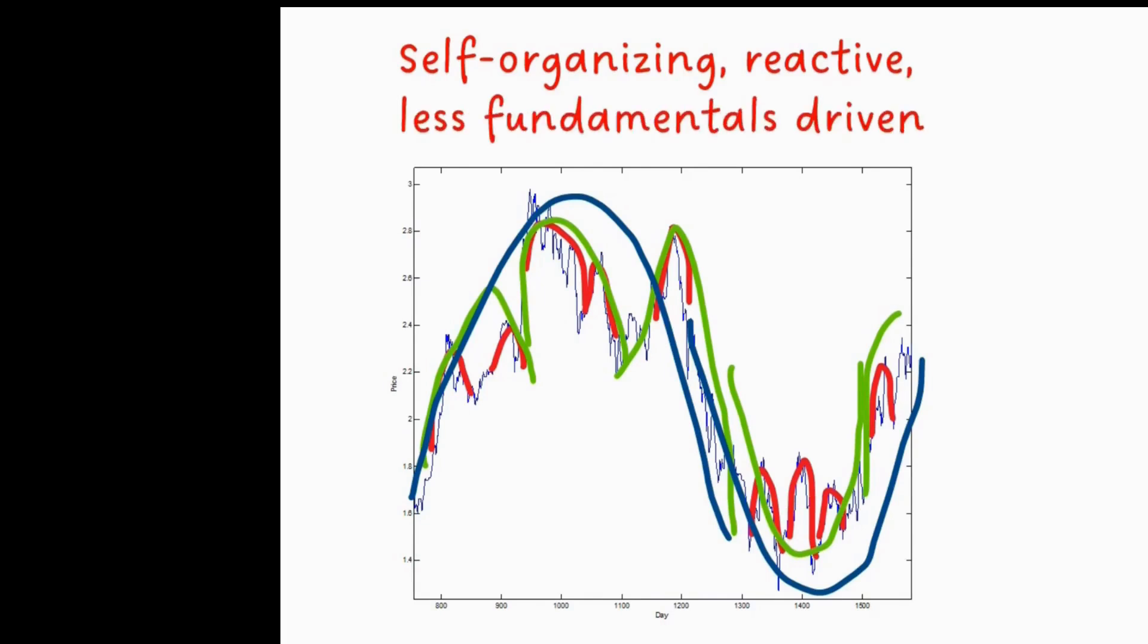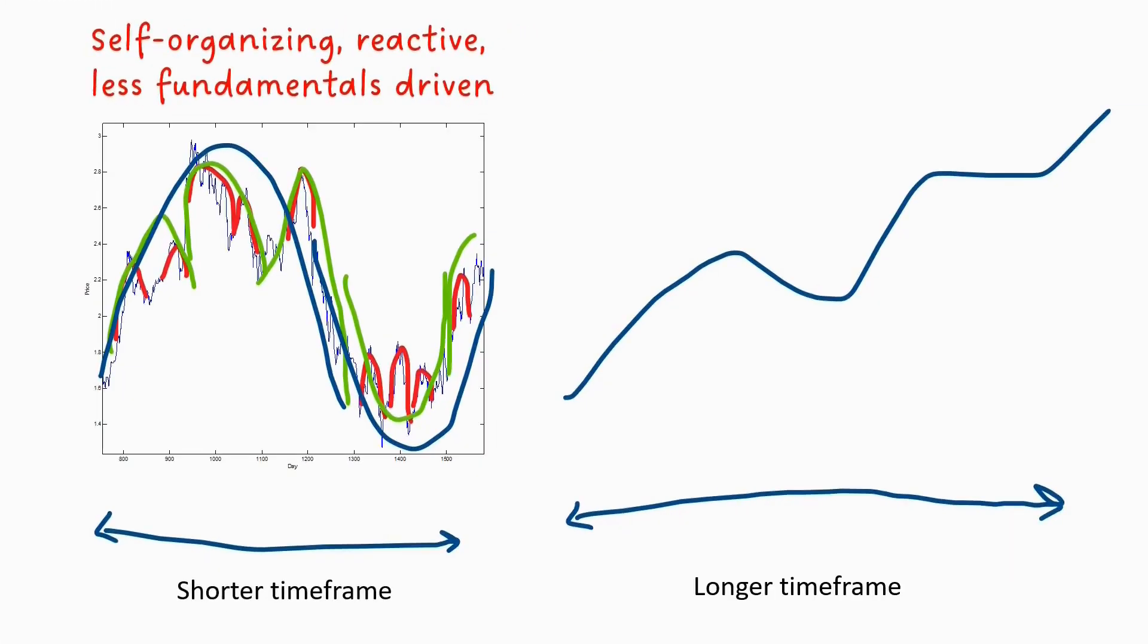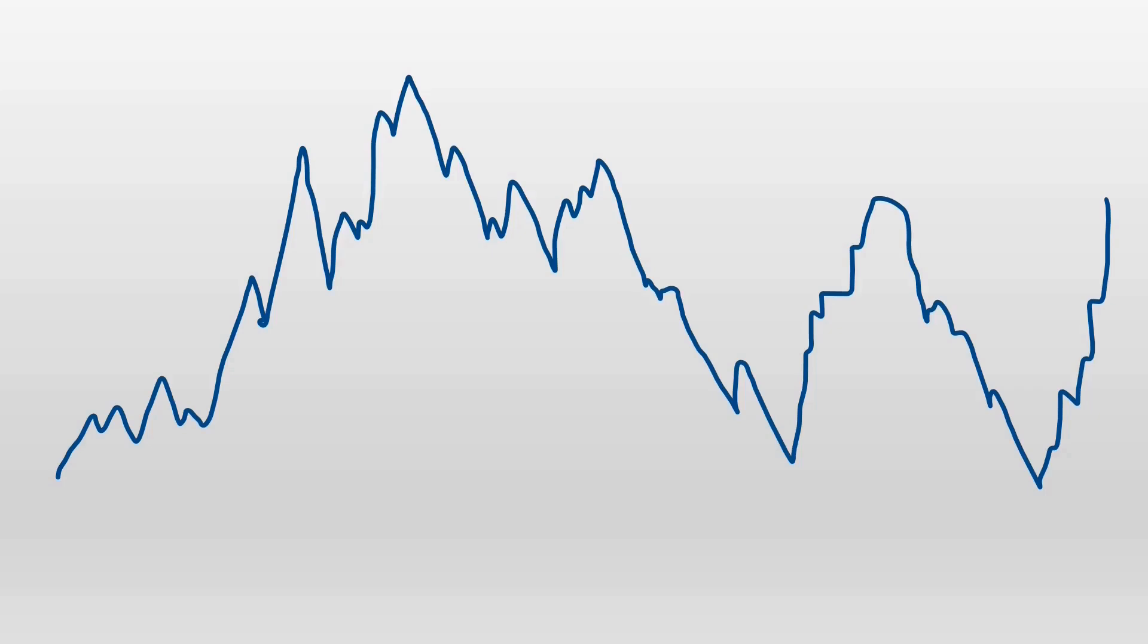You can think of these scales as being driven by self-organizing market behavior where we have buyers and sellers who are continuously responding to each other's actions. At this scale, the dynamics are far more reactive and less driven by the fundamentals of the stock. Conversely, over the longer term we expect to see trends become apparent and that the price will be more driven by the fundamentals.